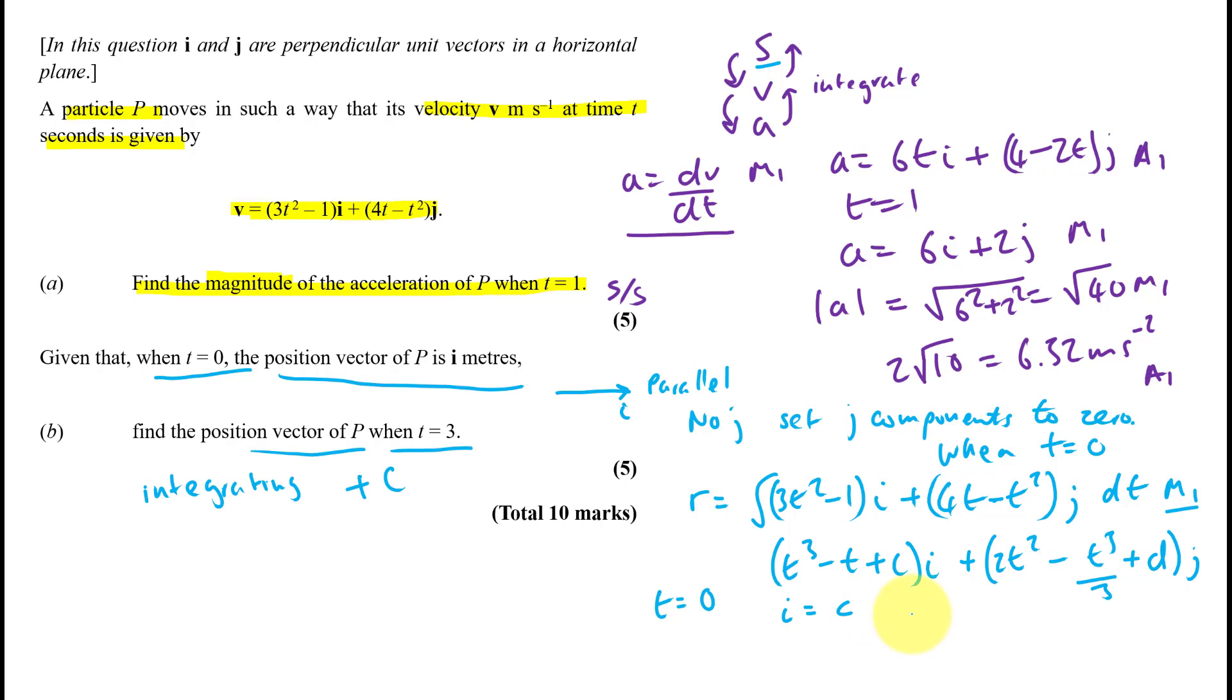So when c equals 1. Well there's no j component. So all that must be 0. So d has to equal 0. Right, and that should make sense. Because no j, so all this must be 0. So d must be in fact 0.